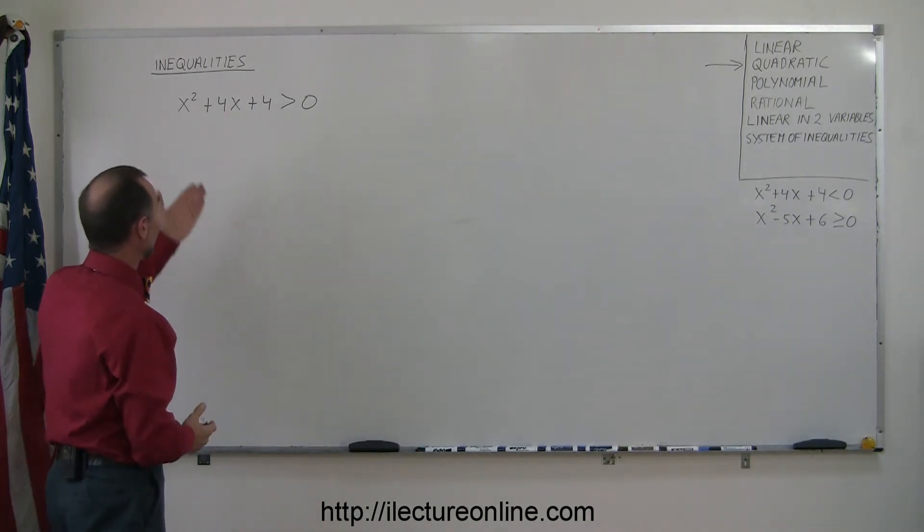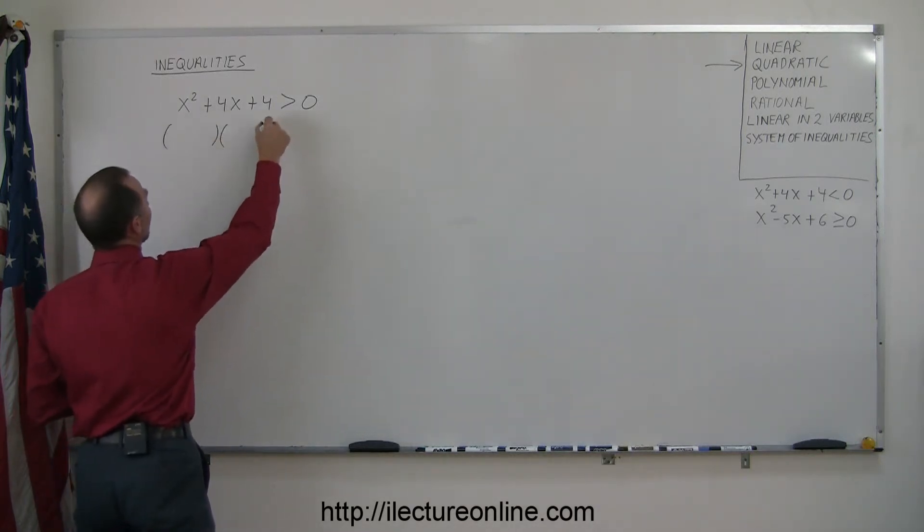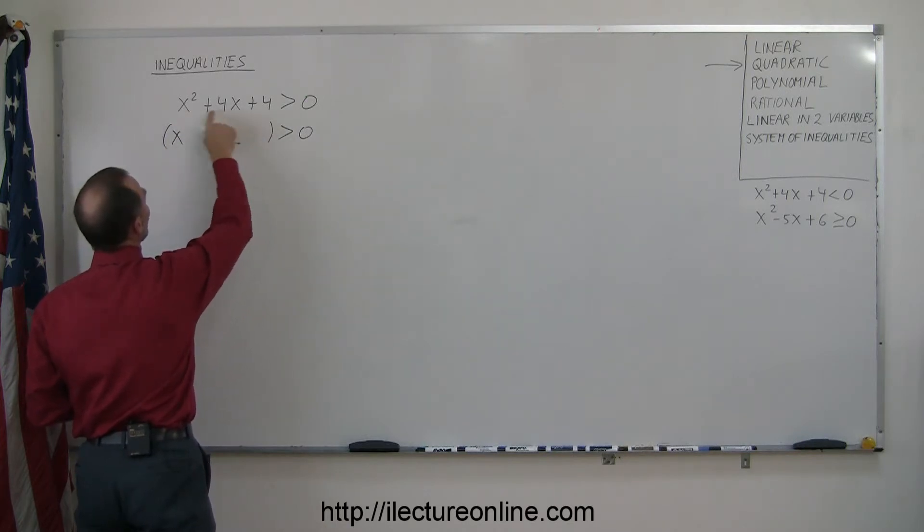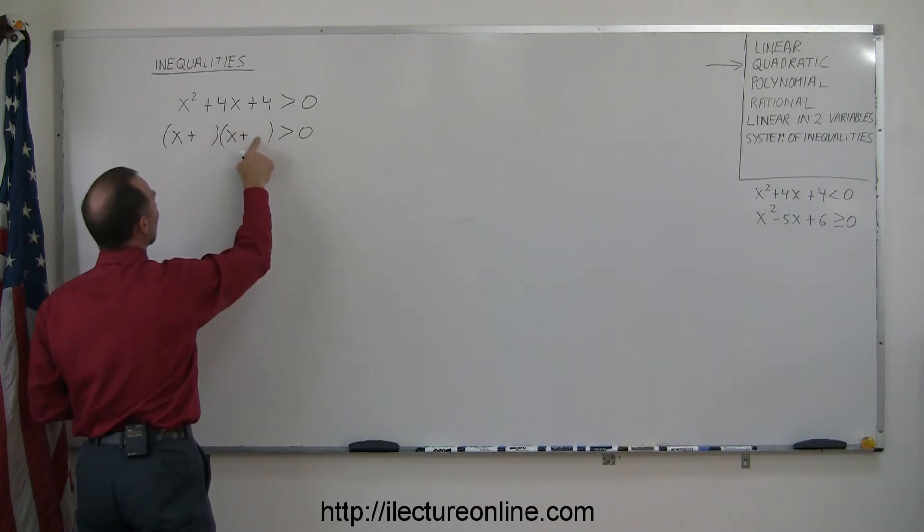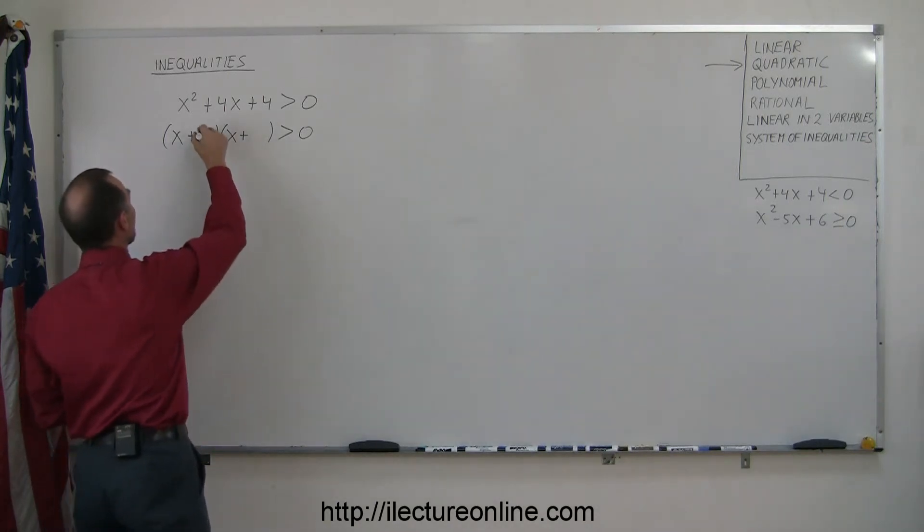So again the technique is to first factor the left side. We're going to write this as the product of two binomials. We end up with an x and an x. Since these are two pluses, we need two pluses right here, and now we look for two numbers that when you multiply you get a four, when you add them you get also a four, and of course the only solution is that they're both a two.